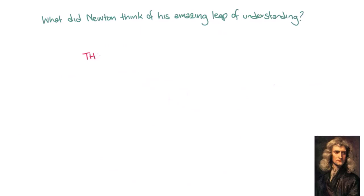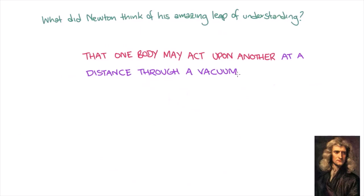So what did Newton think of his realization? After Newton had theorized his law of universal gravitation, he wrote the following: that one body may act upon another at a distance through a vacuum, or in other words, a force between two objects due to gravity, which we know acts on masses at a distance without requiring any medium such as air to transfer the force.